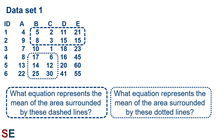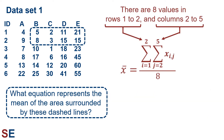Another type of question is to identify what double summation represents the mean of a region in the table. For the dashed rectangle, there are eight values covering rows 1 to 2 and columns 2 to 5. So our double summation goes from i=1 to 2 (rows 1 and 2) and j=2 to 5 (columns 2 to 5) of x_{i,j}, divided by 8 to get the mean.